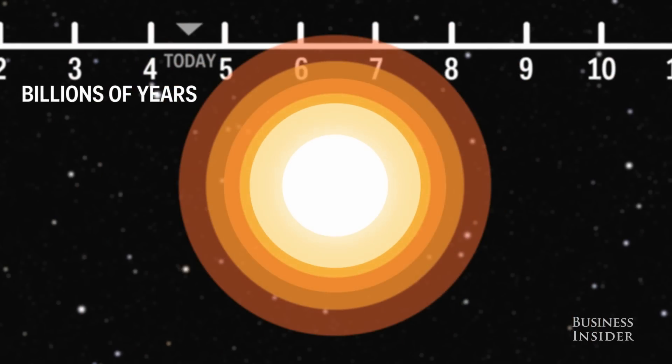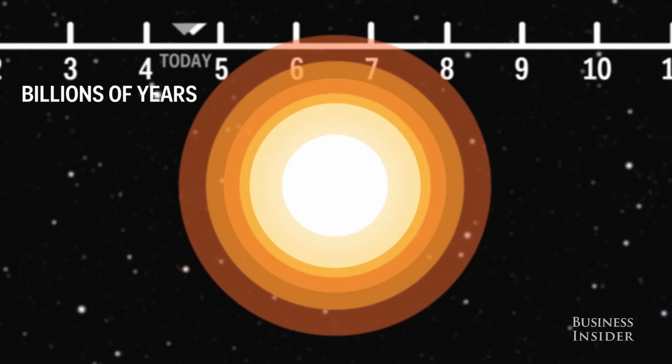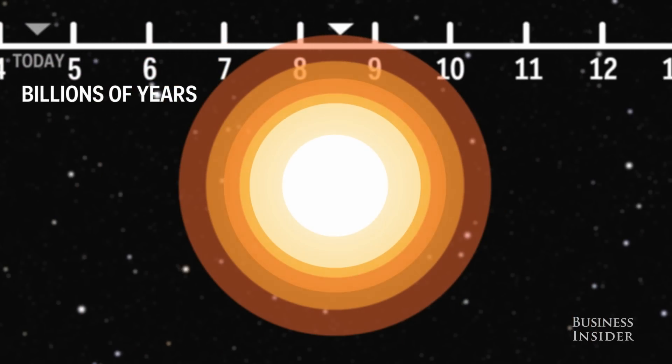However, there is only a finite amount of hydrogen in the core of the Sun. For the next 4 billion years, the Sun will continue to fuse hydrogen to make helium. As more helium builds up, the core will shrink. As a result, nuclear fusion reactions accelerate. Faster fusion means more energy output.